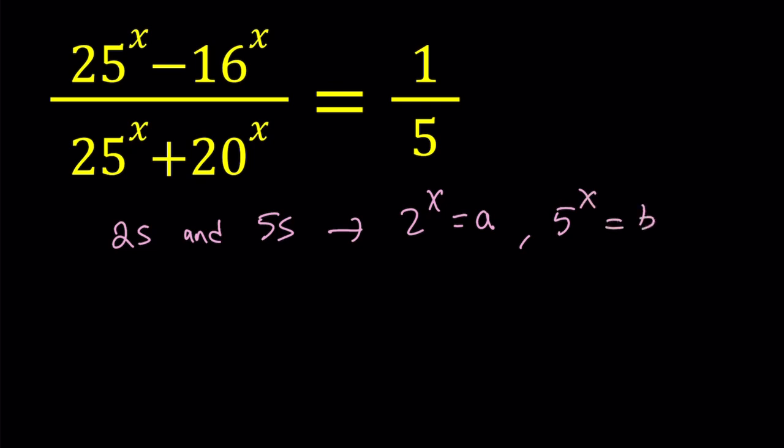From here, 25 to the power x can be written as 5 to the power x squared because 5 squared is 25 and you can easily interchange those exponents. So that becomes b squared. 16 to the power x can be written as 2 to the power x to the 4th power because 2 to the 4th is 16, and this can be written as a to the 4th power.